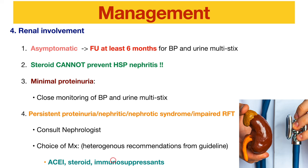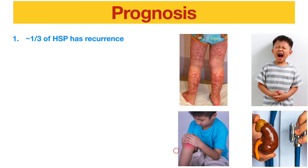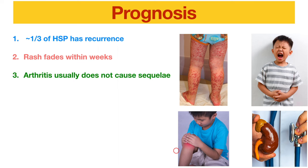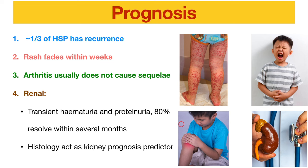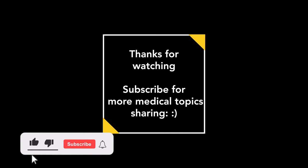For prognosis, one third of HSP cases have recurrence, especially the rashes, which typically resolve within weeks. Arthritis usually does not cause any sequelae. For renal involvement, those with transient hematuria and proteinuria — 80% resolve within several months. For those who underwent renal biopsy, the histology can serve as a kidney prognosis predictor.